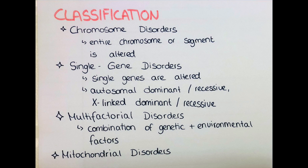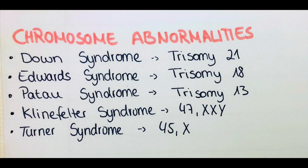Mitochondrial disorders are also classified within the genetic diseases. Those are only a few diseases and they're only inherited in the maternal line, but I will explain that later. So let's talk more about the chromosome abnormalities. One of the chromosome abnormalities that you probably have heard of is Down syndrome.